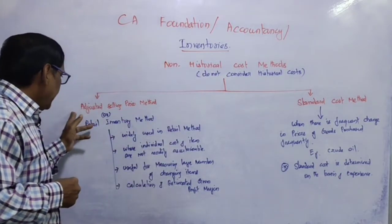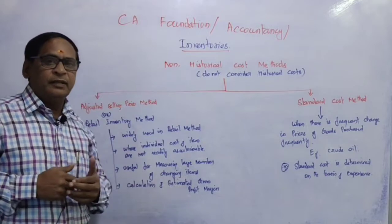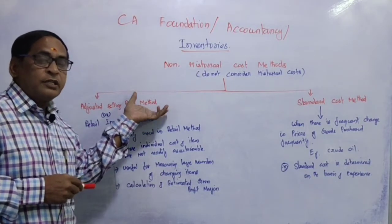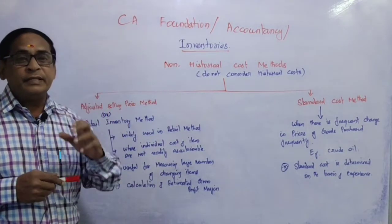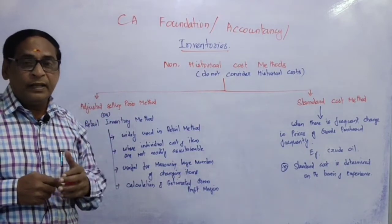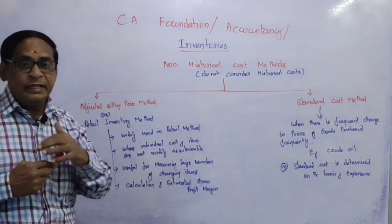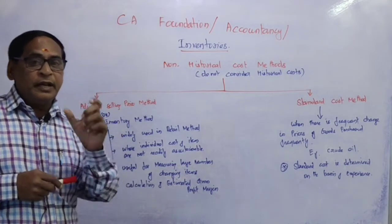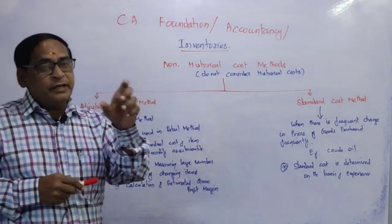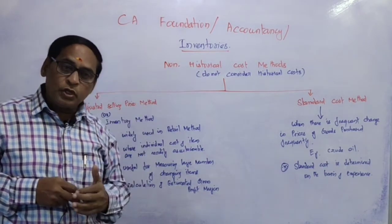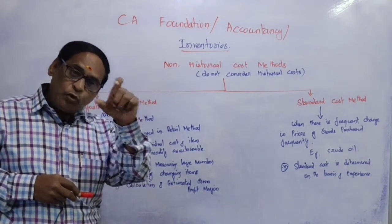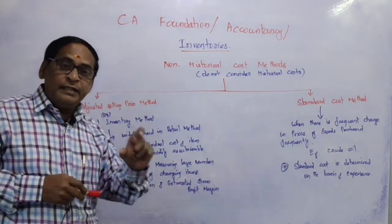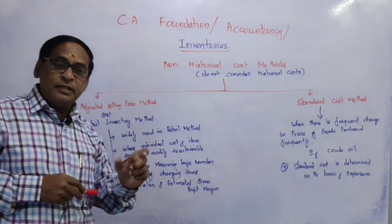There are two different non-historical methods. The first is the Adjusted Selling Price Method. Under this method, we have to find out the cost of purchase. For example, if a sale price is given, we have to add GST. If there is a trade discount, trade discount must be deducted — it will not appear in the books of accounts. Trade discount must be deducted and GST must be added. Any freight or transporting charges must also be added.